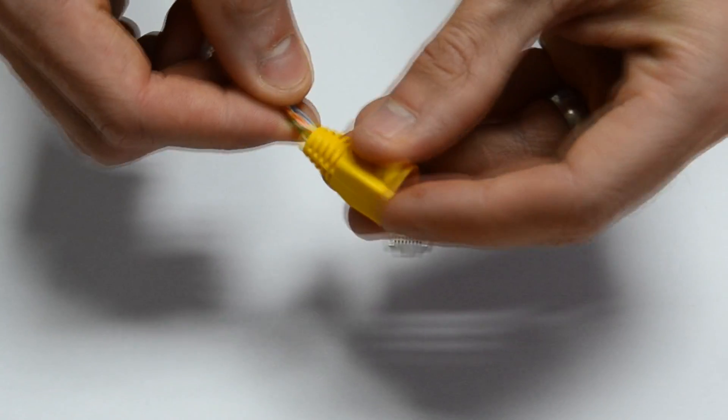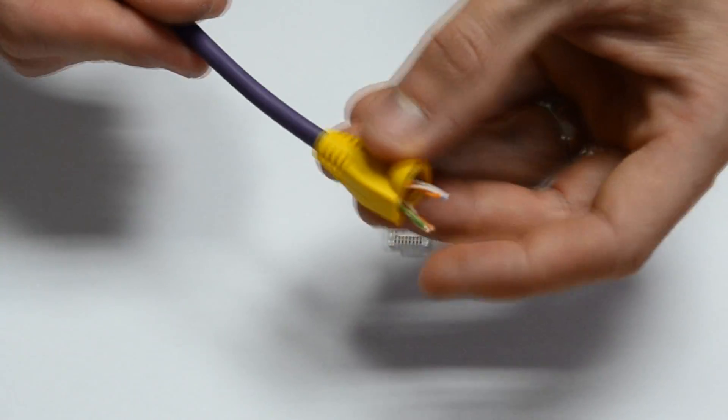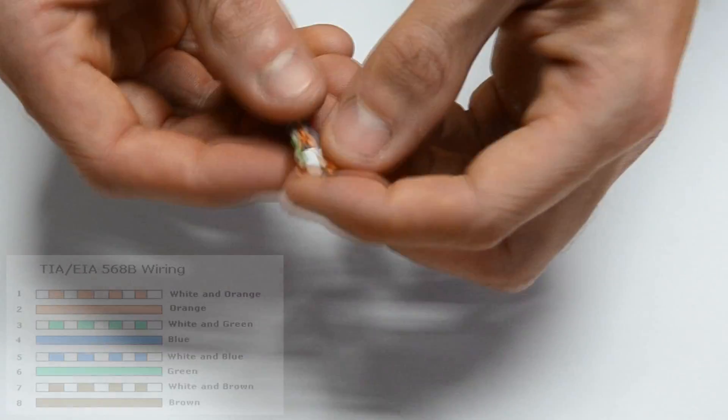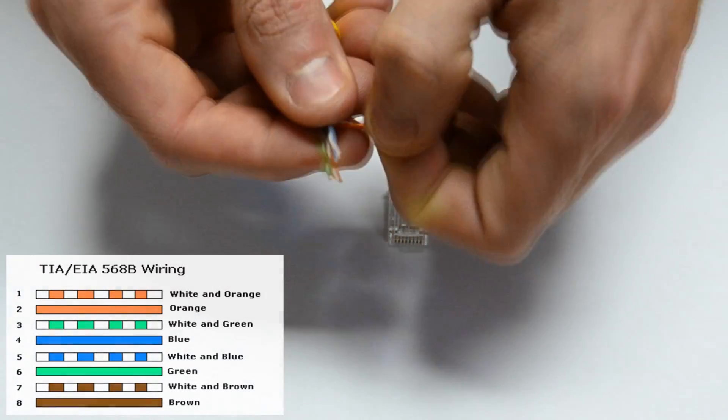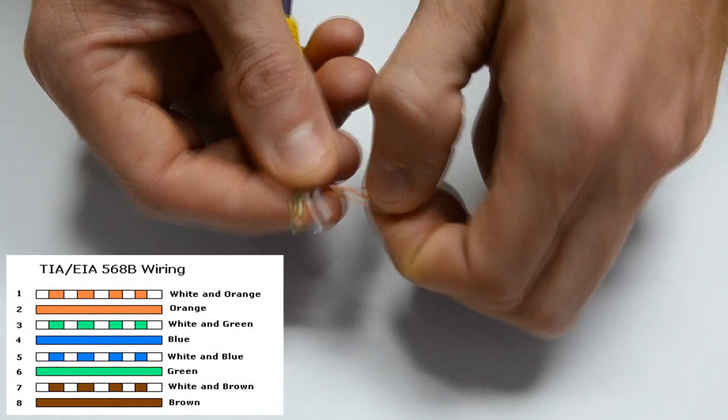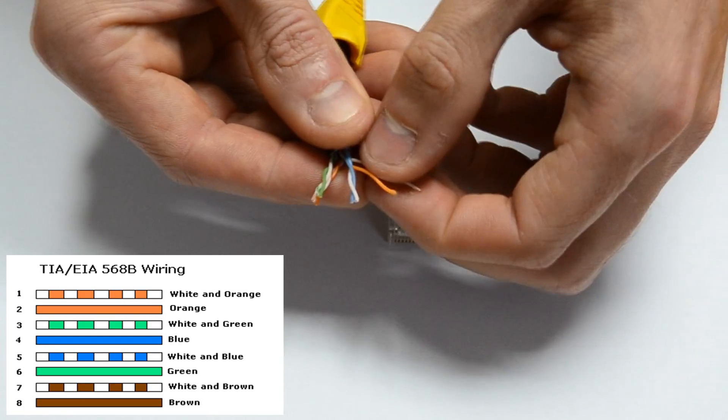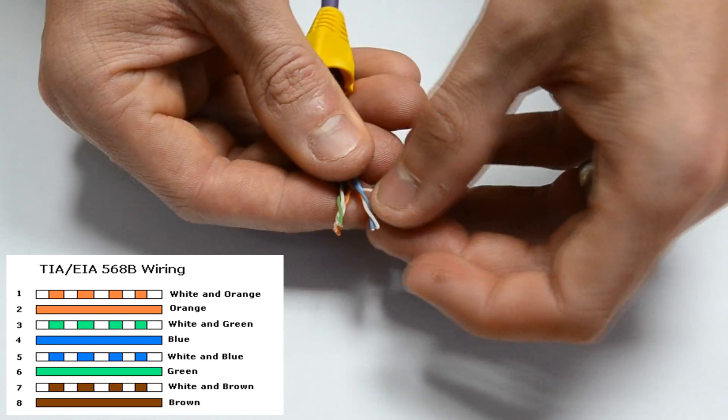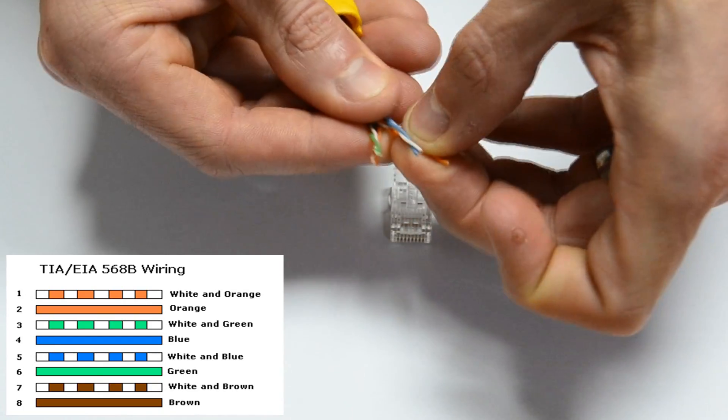Now as I stated previously we're going to be wiring it in the 568B wiring style. Now this from left to right is orange white and orange cable. Then we're going the white and green and then the blue cable. Then the white and blue and then the green cable. Then the white and brown and then the brown cable.